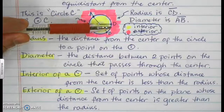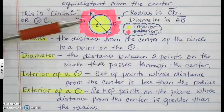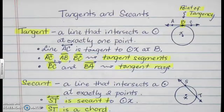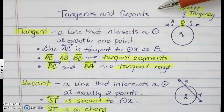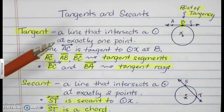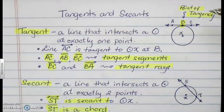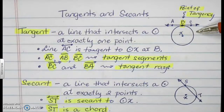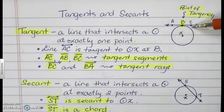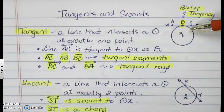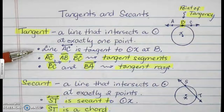The circle itself is this outline, which is made up of an infinite number of points that are equidistant from the given center. Now, tangents and secants — these are lines. A tangent is a line that intersects a circle at exactly one point, called the point of tangency. In this illustration, circle X is intersected by line AC at point B, meaning B is the point of tangency.